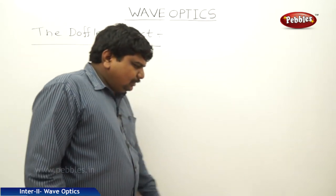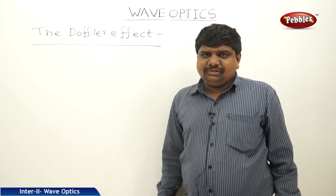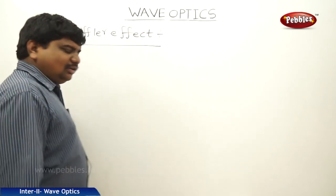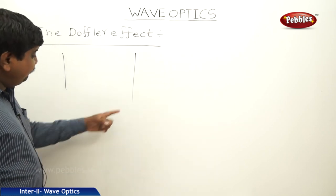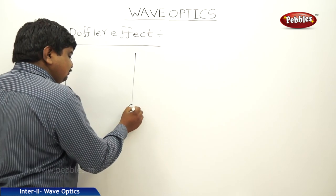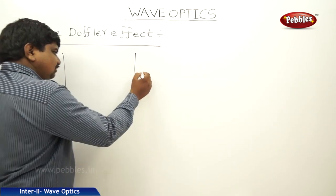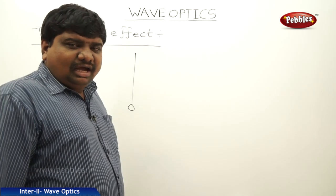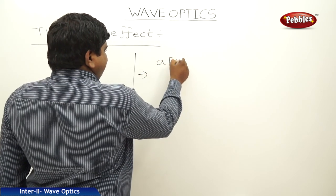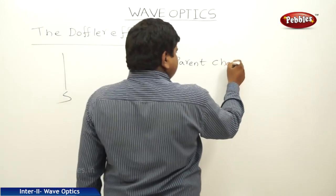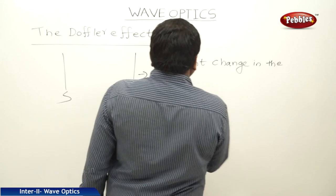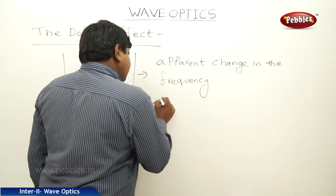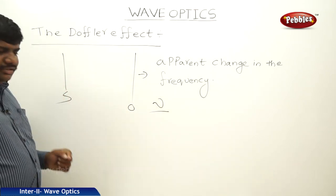The next concept is the Doppler effect. We have observed the Doppler effect in the case of sound waves, but the Doppler effect is not only valid for sound waves — it is also valid for light waves. The definition: whenever a source and observer are moving relative to each other — whether the source is stationary or the observer moves towards or away from the source, or vice versa — there is an apparent change in the frequency due to the relative motion.